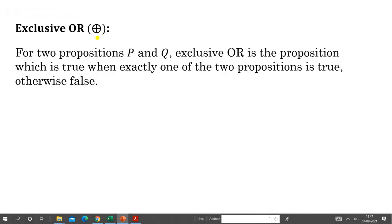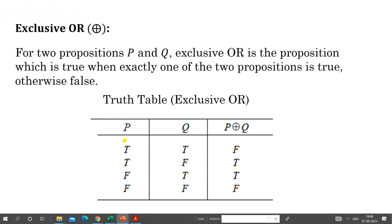Now we define some other logical operators. The first is exclusive OR. In regular disjunction (P OR Q), the result is true when either P or Q or both are true. But in exclusive OR, the 'or both' case is excluded — it means either P or Q, but not both. So when both P and Q are true, exclusive OR is false; otherwise its truth table is the same as regular disjunction.